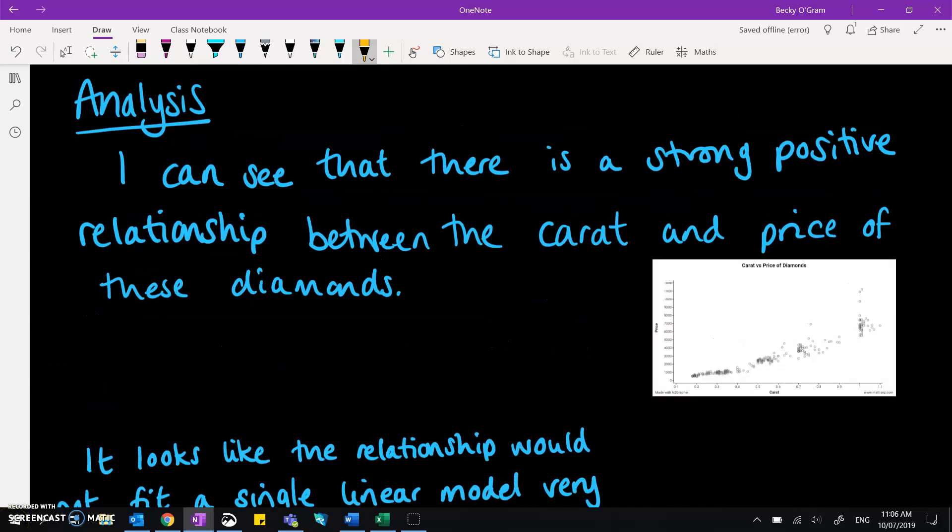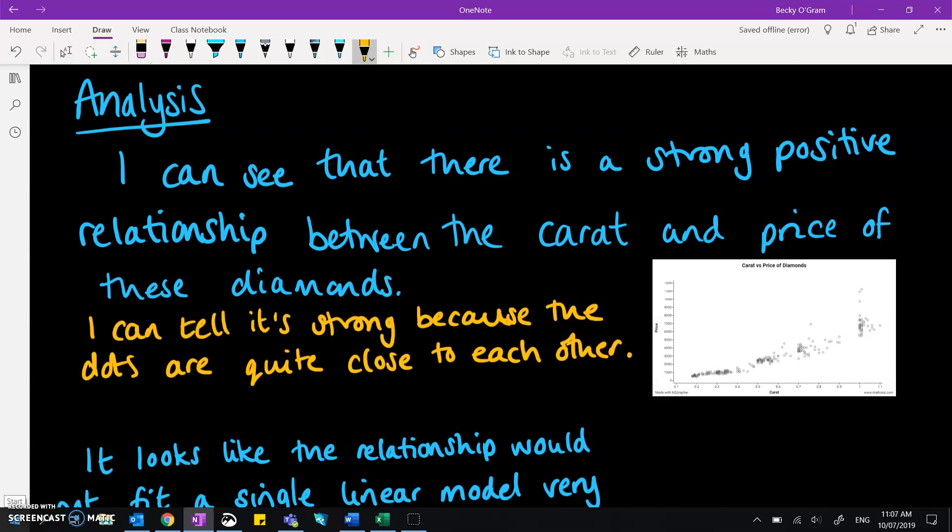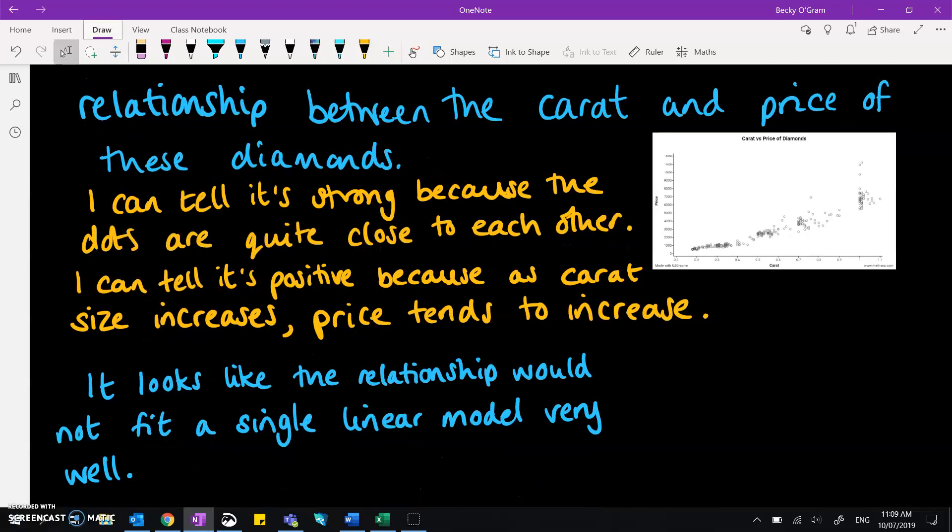And it's a very simple little trick, which is about justifying what you say with why it is that you think that. And you can do this with the sentence that starts with, I can tell this because. So for example, I can tell that it's strong because the dots are quite close to each other. And I can tell it's positive because as carat size increases, the price tends to increase.